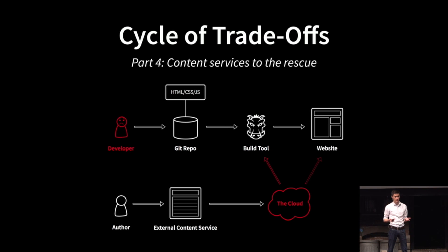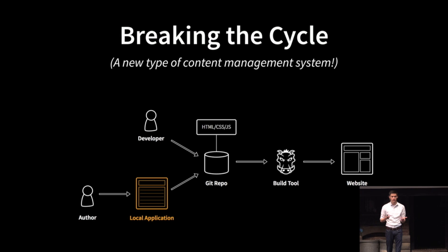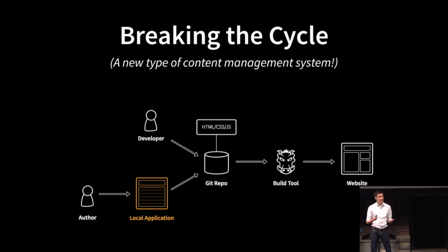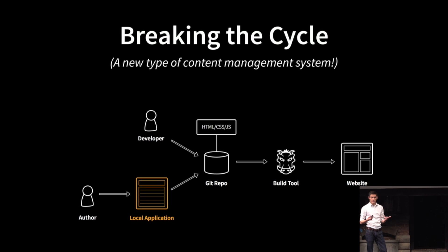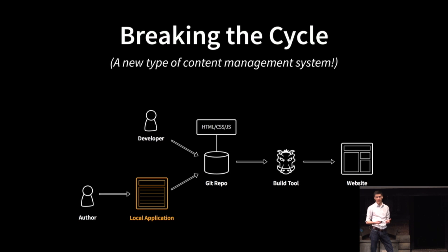So how do we break this cycle of trade-offs between developers and authors? What if we built a friendly GUI for all of the developer-y things that Lauren had to do to use Jekyll, and shipped it as a desktop application instead of as a service? We'd get a brand new kind of content management system — a tool that instead of just facilitating authors, actually turns authors into web developers, at least from the perspective of a Git repository.